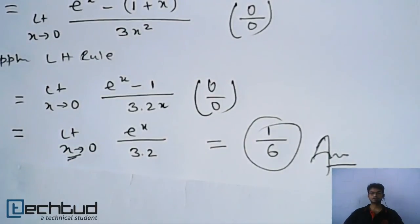So likewise, first of all, we have to see whether this function is in 0 by 0 form or infinity by infinity, or we will find out whether we can apply L'Hospital's rule so that our problem will be simpler. I hope this is clear. Thanks for watching.